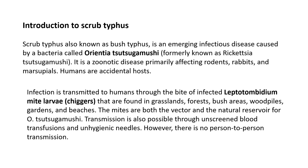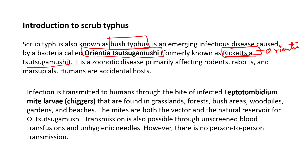Scrub typhus is also called bush typhus. It is an emerging infectious disease caused by Orientia tsutsugamushi — previously known as Rickettsia tsutsugamushi, with the genus later replaced by Orientia. This is a zoonotic disease that can travel through animals and arthropods.